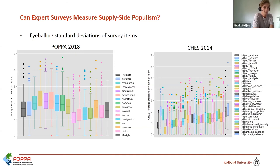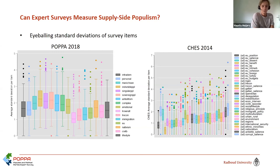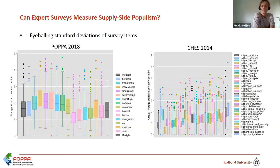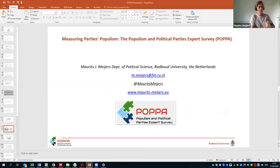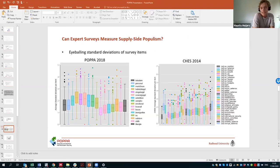Often-used resources in political science, like the EU salience and EU position variable in the Chapel Hill expert survey, get very similar standard deviations. So I'm not too worried, but perhaps the community should think about what our benchmarks are. Let me also show you a little bit where you can find the data and play with it.